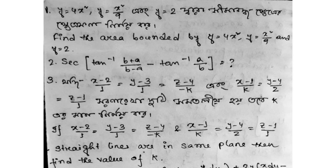Second question is tan inverse B plus A divided by B minus A minus tan inverse A by B equals koto. Then solve the question. The next question is if X minus 2 divided by 1 equals Y minus 3 divided by 1 equals Z minus 4 divided by minus K, and X minus 1 divided by K equals Y minus 4 divided by 2 equals Z minus 1 divided by 1.